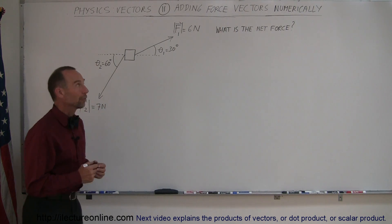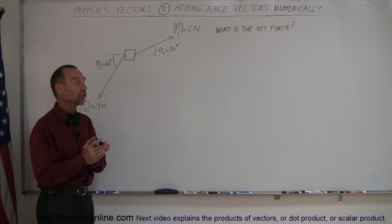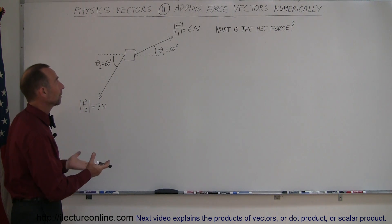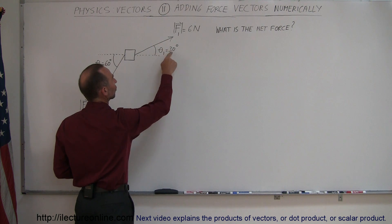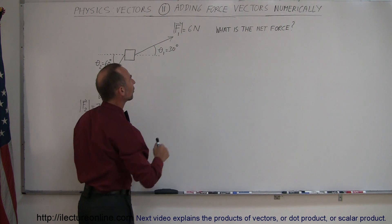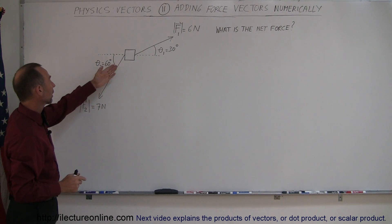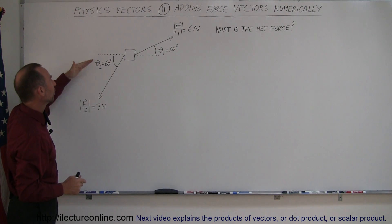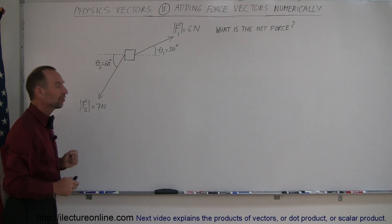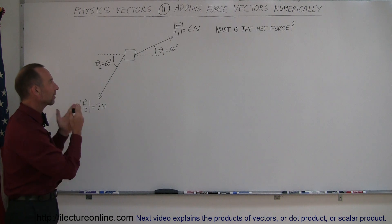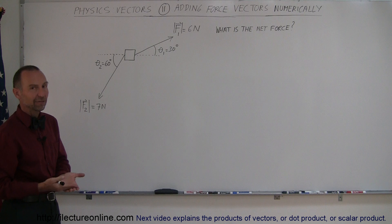In our next example on how to add vectors, we're going to find what we call the net force on an object when two forces are acting upon it. Force 1 is pulling in a direction 30 degrees above the horizontal with a force of 6 Newtons. Force 2 is pulling on the object 60 degrees below the horizontal with a force of 7 Newtons. So what would be the net force acting on that object? That's the same thing as asking what is F1 plus F2.